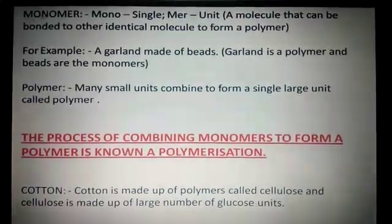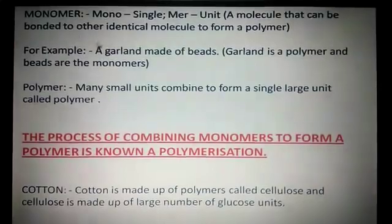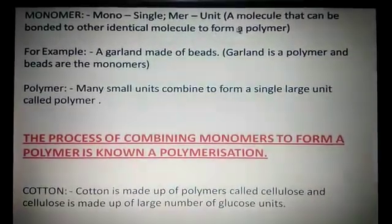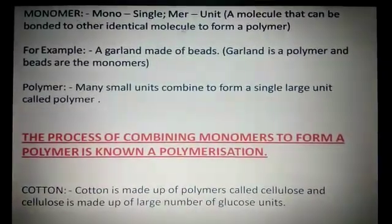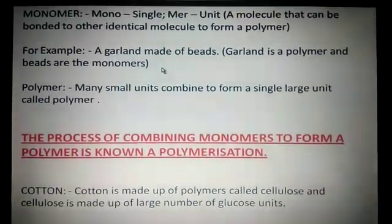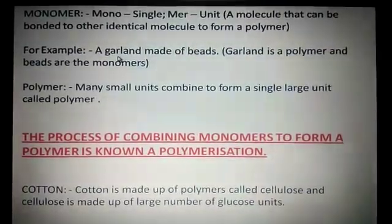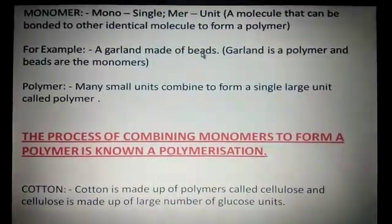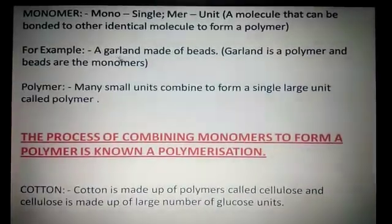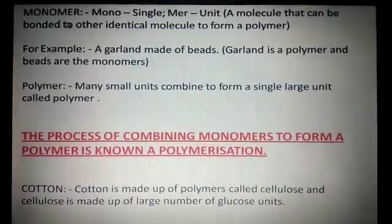To define monomer: a molecule that can be bonded to other identical molecules to form a polymer. These two terms are new for you children. So I took an example of a garland — in Hindi, mala — and then I took beads. So, the garland is the polymer and the beads are the monomer.